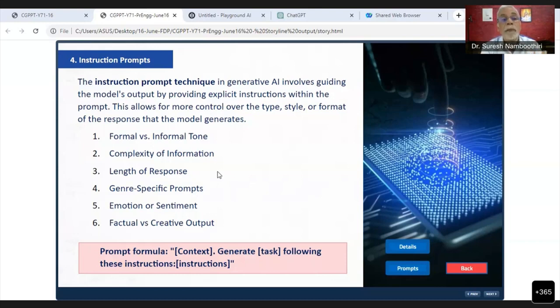You can tell it two sentences or two paragraphs. Then genre-specific prompts, emotion or sentiment—ChatGPT or generative AI can understand emotions not from our voice but from words, from the text. Then factual versus creative.